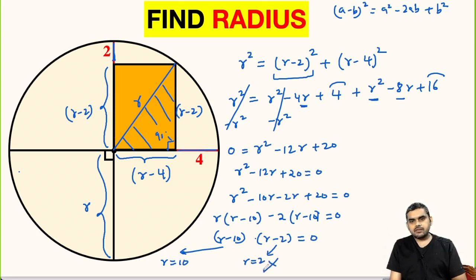But we have to reject r is equal to 2 because if we take r is equal to 2, then r minus 4 will be 2 minus 4, so this will be negative. Hence we discard this value. We will accept r is equal to 10.